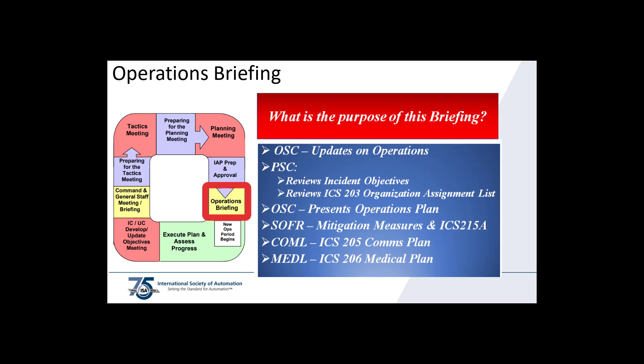The operations briefing is where the plan is presented to those doing the work to solve the problem. It starts with the operations section chief providing an update on current operations. The planning section chief reviews the incident objectives and the ICS-203 organization assignment list. The operations section chief then presents the operations plan for the upcoming operational period. The safety officer reviews the hazard mitigations and the ICS-215A. The communications unit leader presents the ICS-205 communications plan.